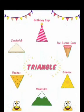And now look at these triangular shaped objects. Birthday cap, sandwich, ice cream corn, nachos. Nachos जो है बेटा ये एक Mexican dish होती है. Okay. Mexico के लोग इसे बड़े चाव से खाते हैं. Cheese, mountain. आपने देखे हैं mountains. Mountains भी triangular shape के होते हैं. So, these are the different objects with triangular shape. Okay.